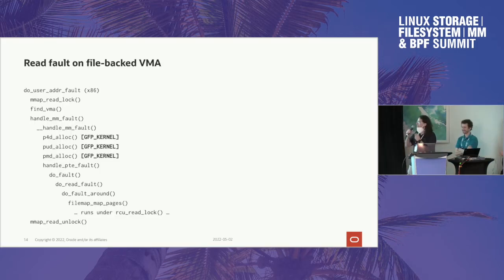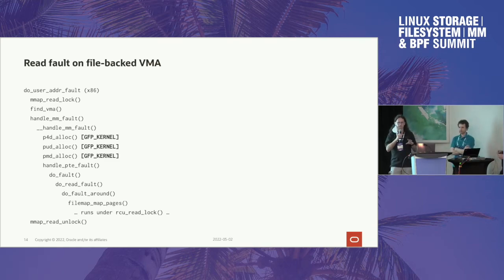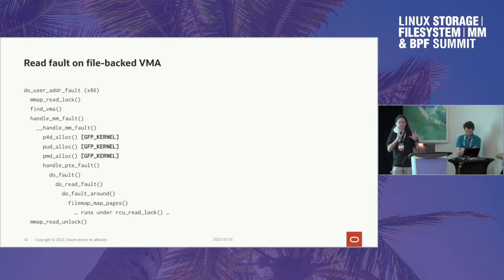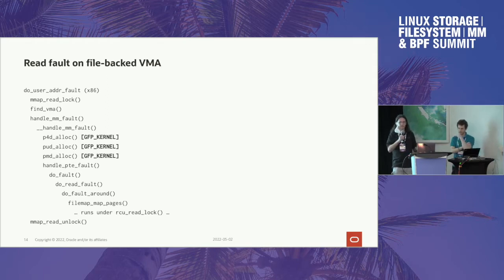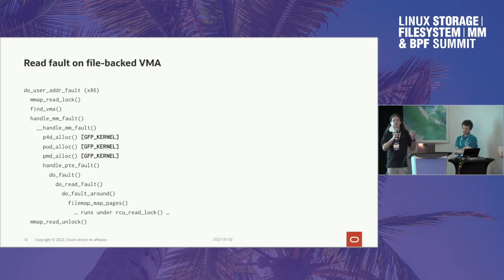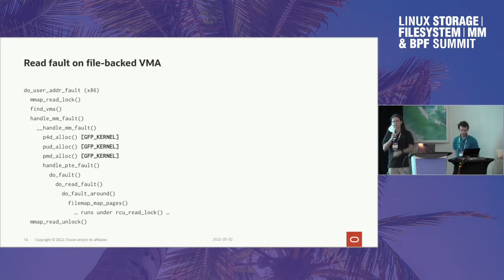Just to elaborate on what Liam is saying — what we're proposing for the next merge window, what Andrew is working hard to get merged in, is the maple tree for storing VMAs, but we're not using any of the RCU functionality yet. Everything is still being protected by the mmap semaphore. The RCU work is future development — we haven't even finished writing the code. It's a win in terms of code complexity: we're getting rid of the VMA cache, the doubly linked list connecting all VMAs together, and the RB tree usage there.